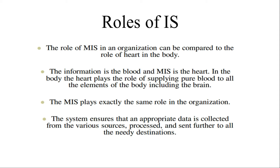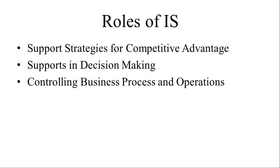Now, to talk about the levels of business activity, we discuss three levels: the strategic management level, the management control level, and the operational control level for daily transaction processing and operations. The first role of the information system is strategies for competitive advantage — strategic planning and control. This involves determining what markets and businesses the company should be in, assessing the current situation and future plans.